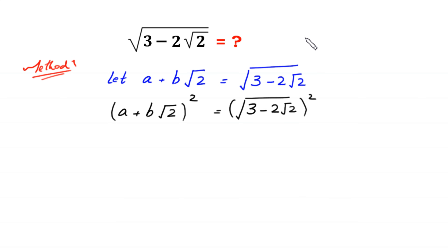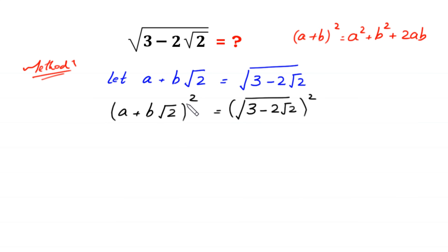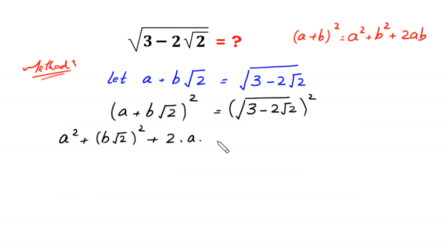According to the algebraic identity (a+b)² = a² + b² + 2ab, we expand the left side. (a + b√2)² gives a² + (b√2)² + 2·a·b√2, and the square cancels the square root on the right side, leaving 3 minus 2 times square root of 2.